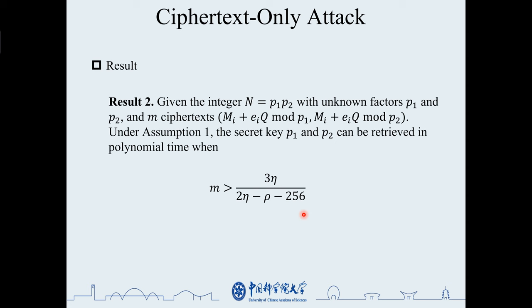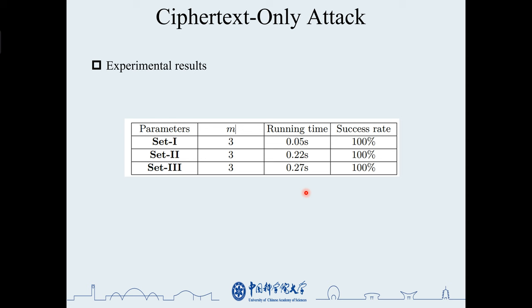In the next section, we present the ciphertext-only attack against the CLS scheme, but requires a known modulo n. The result is that we can recover private keys p1 and p2 as long as the number of ciphertexts m is greater than this value. We have also done experiments, and for these three parameter settings, three ciphertexts can successfully recover the private key.